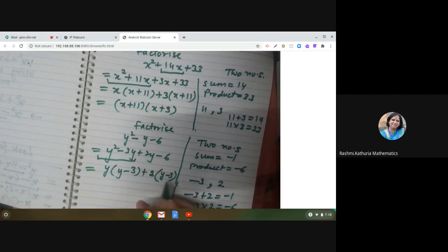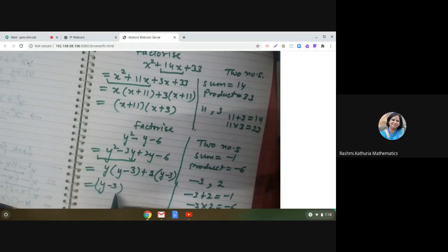Now we see y minus 3 is common. So the answer is y minus 3 into y plus 2. These are the factors of y square minus y minus 6.